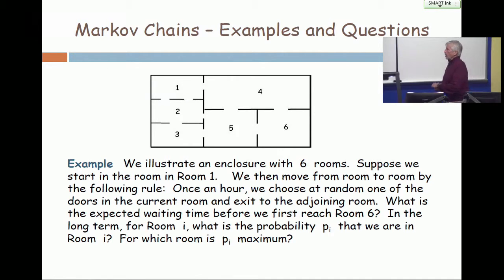So the idea of what's called a Markov chain. A Markov chain can be visualized by an example like this. I have a collection of rooms, and the rooms have doors, and the idea is that you move from room to room by the following thing, that there's a certain number of doors, and you choose one at random.